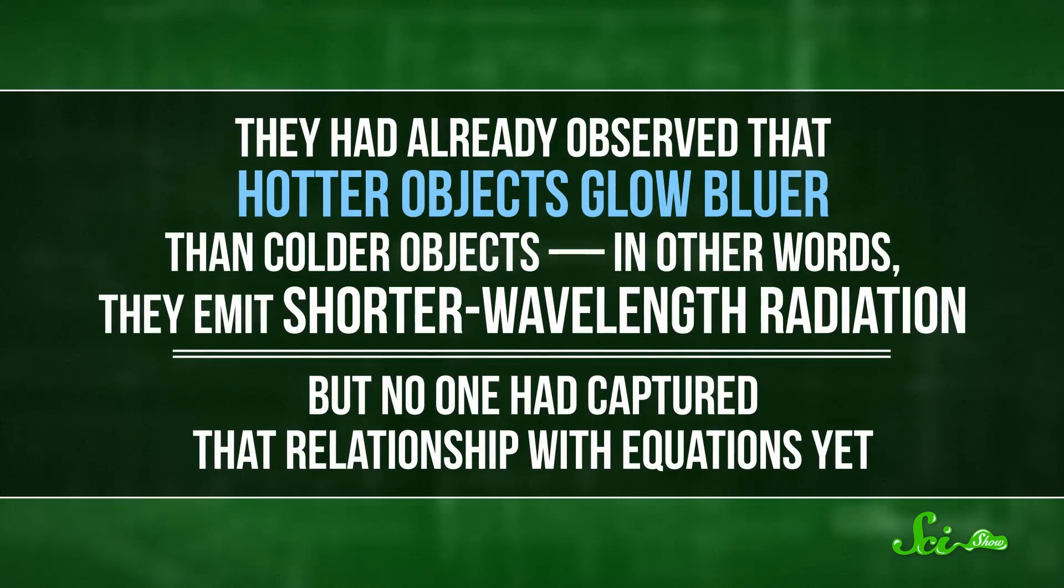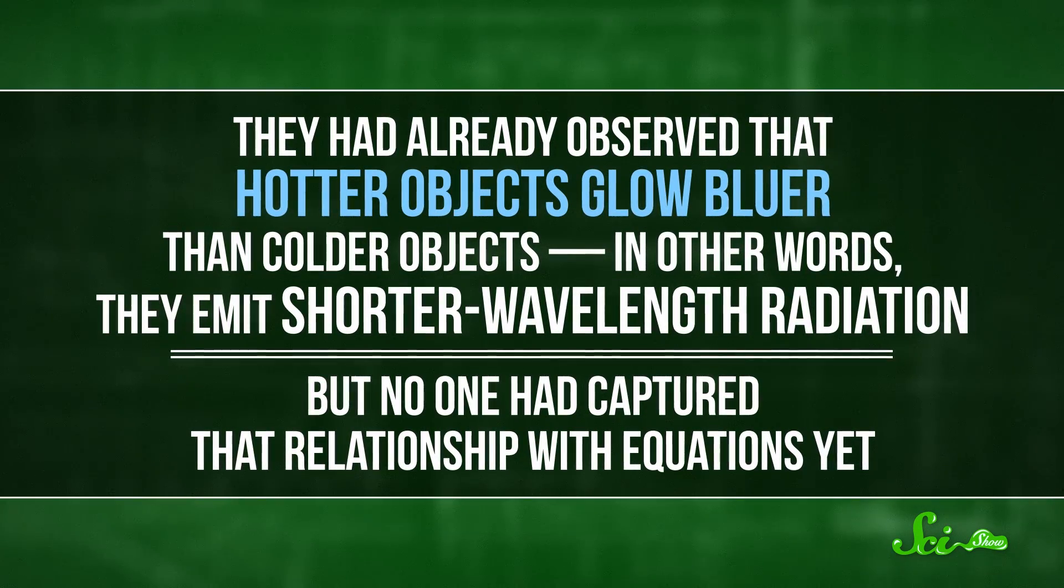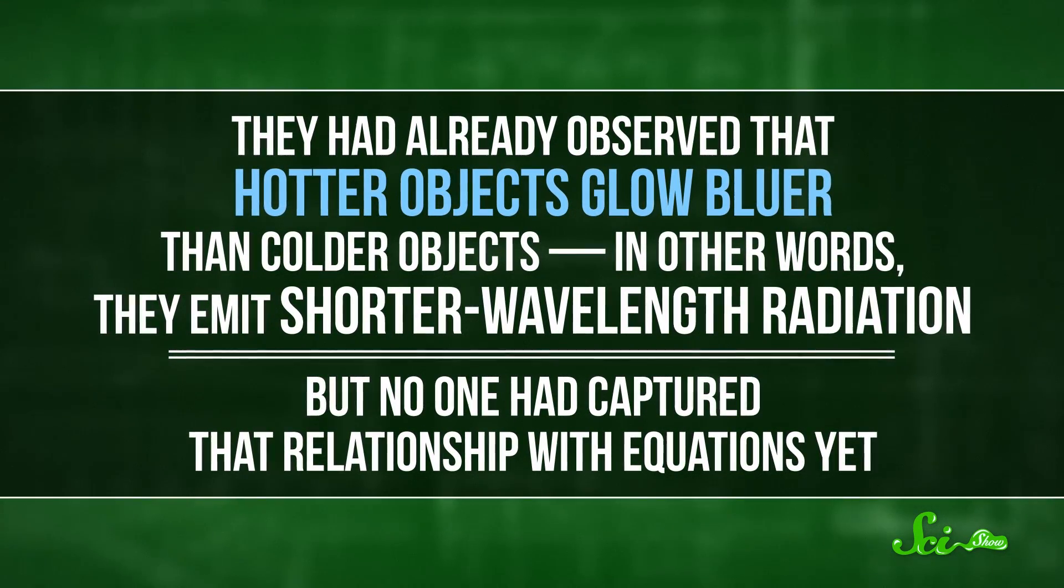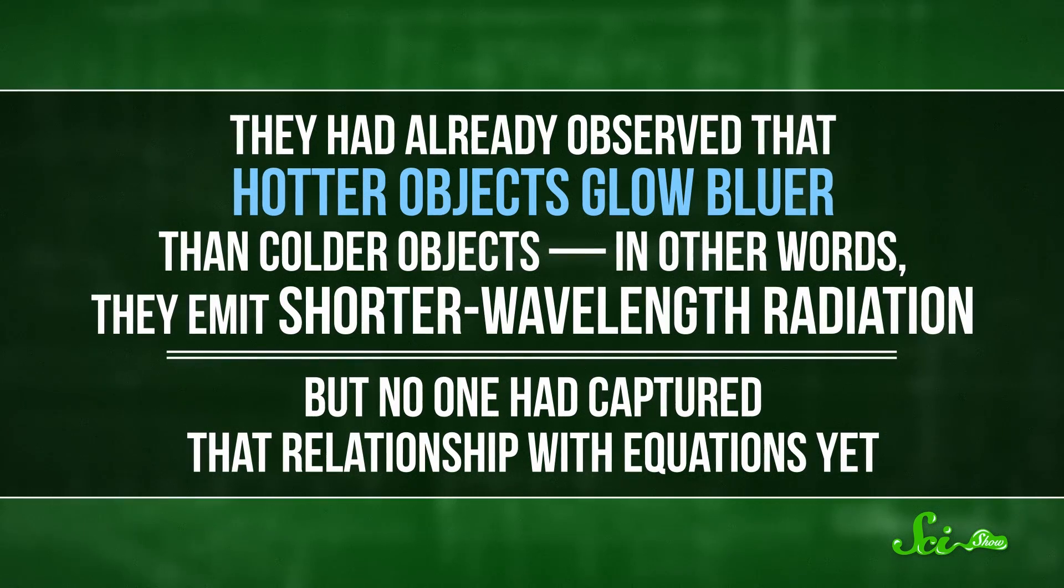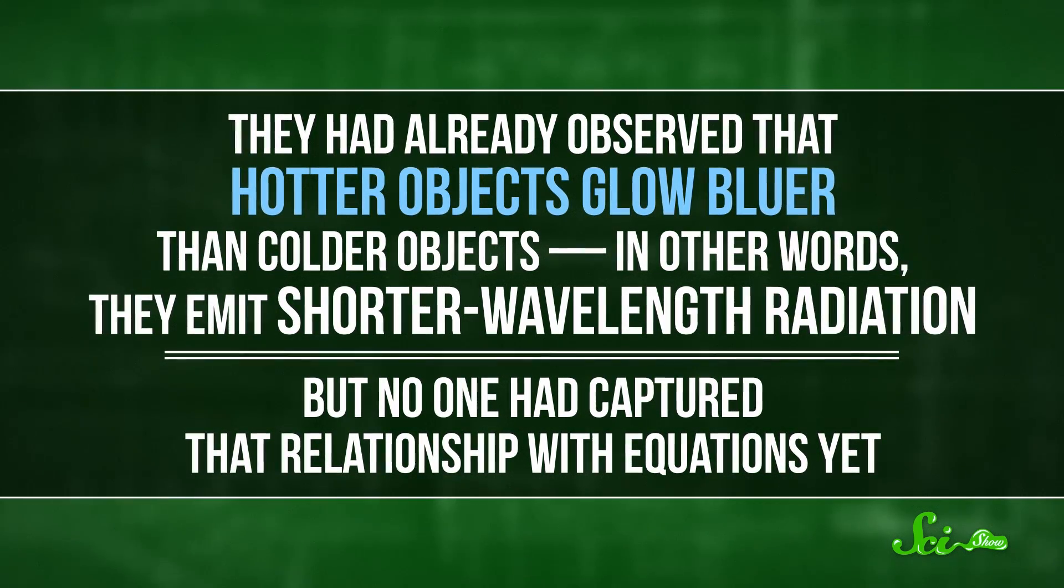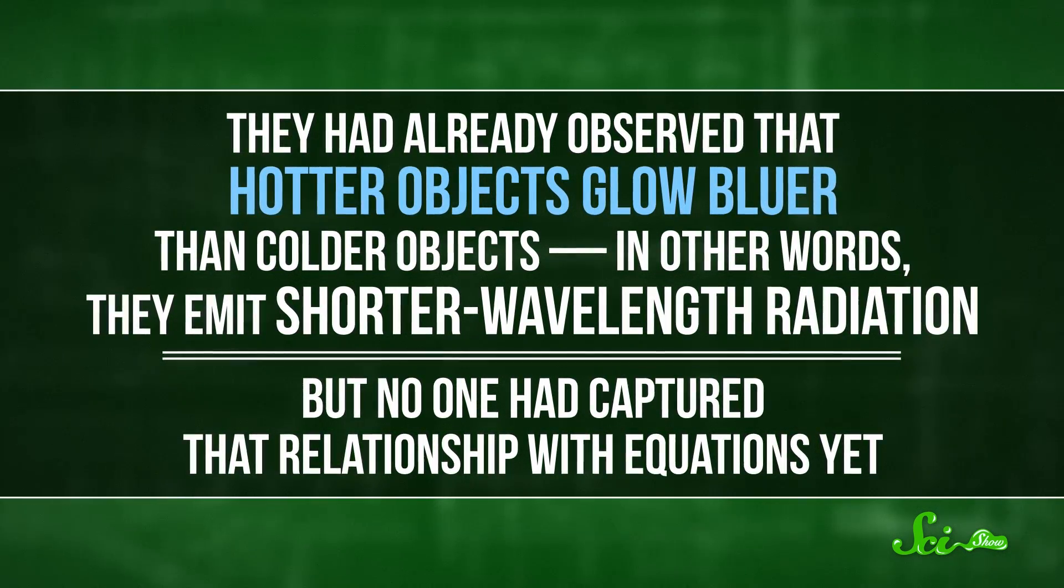The story begins in the mid-nineteenth century. Scientists already knew that when you heat up an object, it gives off electromagnetic radiation — energy in the form of visible light, radio, ultraviolet, or other types of radiation on the electromagnetic spectrum. The challenge was figuring out how much, and at which colors and wavelengths. They had already observed that hotter objects glow bluer than colder objects. In other words, they emit shorter-wavelength radiation. But no one had captured that relationship with equations yet.